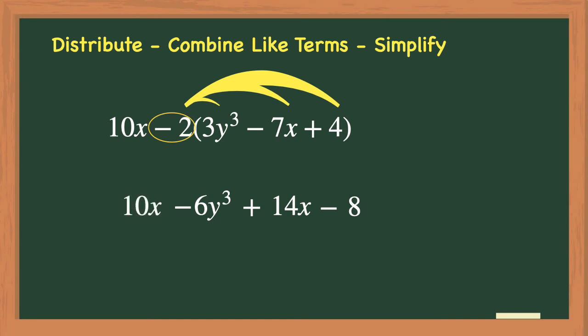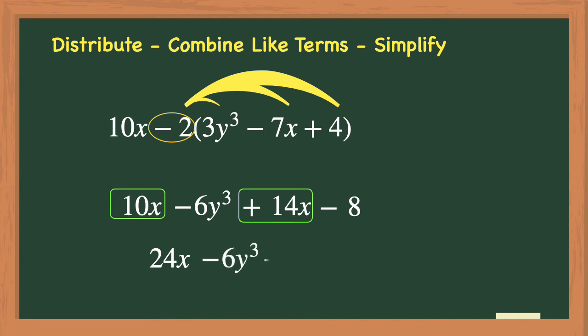We can't forget to bring down that first term of positive 10x. We also drop the parentheses because we have completed the distributive property. The next step is to identify the like terms so that we can combine them. The first term of positive 10x has a like term of positive 14x. We just need to add them together to get 24x. Since there are no other like terms left, we bring down the negative 6y cubed and the negative 8. So we have the simplified expression of 24x minus 6y cubed minus 8.